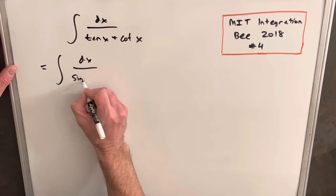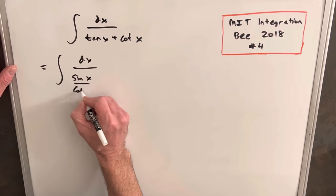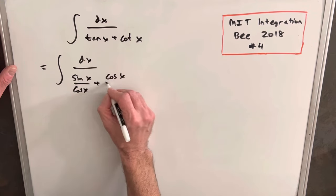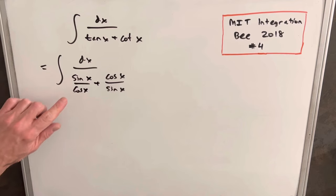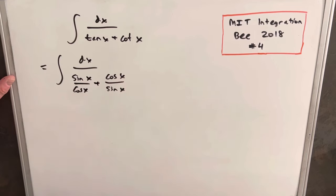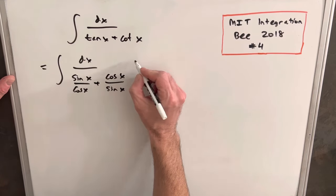we'll write our tangent as sine x over cos x, and we'll write our cotangent x as cosine over sine. Here, I don't really see a good way to integrate this off the top of my head, but what we can do is try to get rid of these cosine and sine to simplify the denominator,